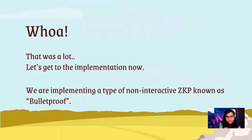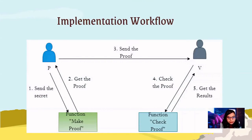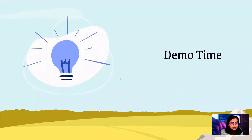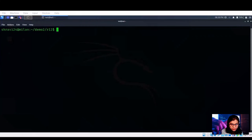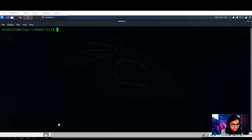We are done with the theory part. Let's go ahead with the implementation. We are implementing a non-interactive type of ZKP called a bulletproof. Simply speaking, the prover will create the proof, send it to the verifier, and then the verifier will validate that proof. In the code, I have added a range proof which will use a bit vector n and will check if the secret is in the range from 0 to 2 raised to the power n. Commitments will be created and passed to the verifier to carry out the verification process. We are taking two inputs: the secret and the bit vector.